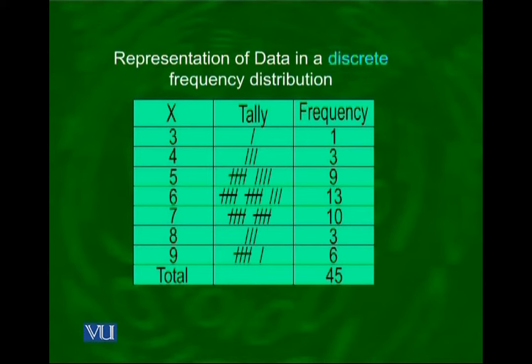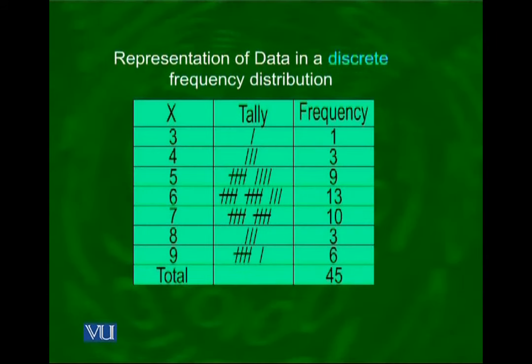This table we have constructed is called a frequency distribution. Why? Because the total frequency of 45 has been distributed among the various values of x. One of those 45 values has been allocated to x = 3, three to x = 4, nine to x = 5, and so on. We have distributed the total frequency among the various categories, which is why it is appropriate to call it a discrete frequency distribution.